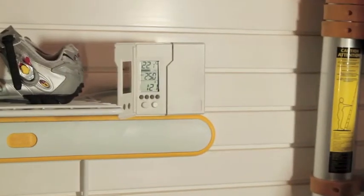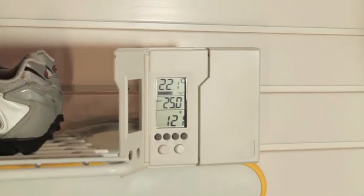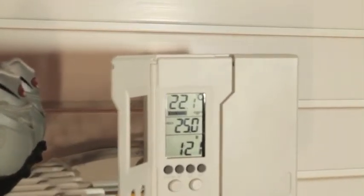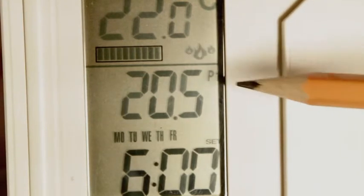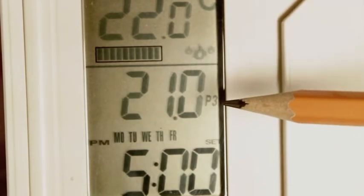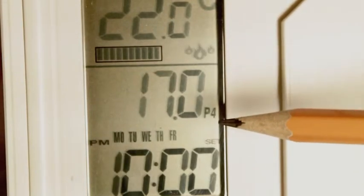Now we will be programming the thermostat. These models are designed to automatically change their temperature four times a day. These program periods are designated as P1, P2, P3, and P4. Program one sets the temperature to a comfortable setting before you wake up. Program two conserves energy while you're at work. Program three returns the temperature to a comfortable setting when you return home. And program four conserves energy while you sleep.